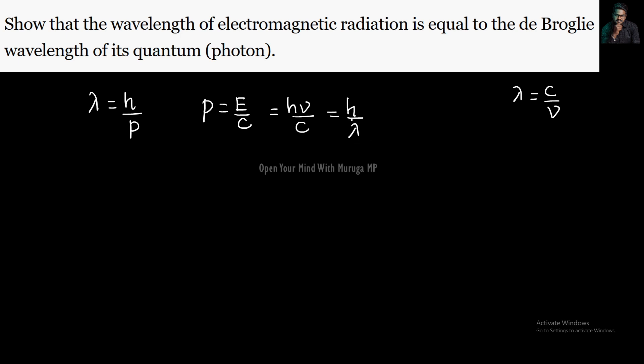So P, which is equal to H by lambda. That is, we can see, lambda which is equal to H by P, correct.